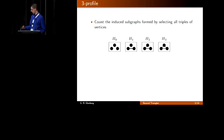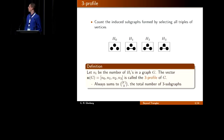We've got the empty graph, a single edge, a wedge, and a triangle. This is an anti-clique, a clique, and everything in between. More precisely, the three profile of a graph G is a vector where each entry corresponds to the number of times one of these subgraphs appears in the graph. This will sum to vertices choose three, which is the total number of triples.